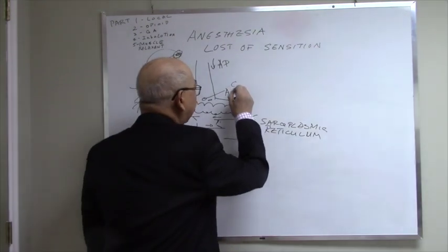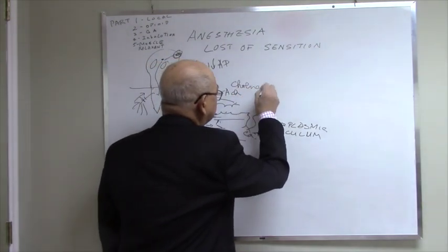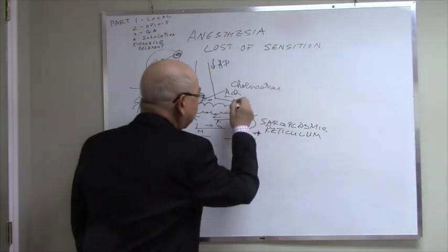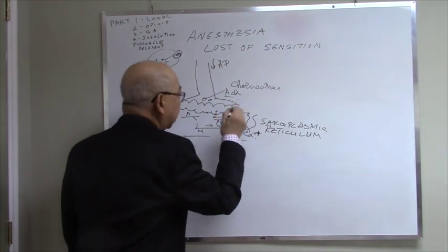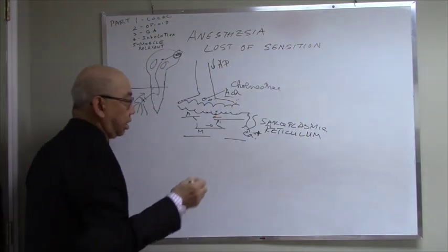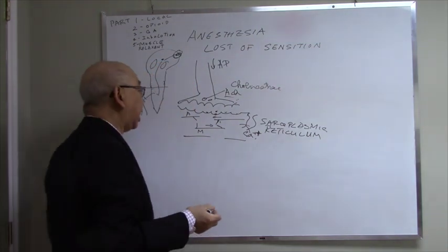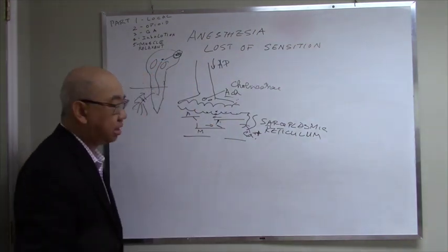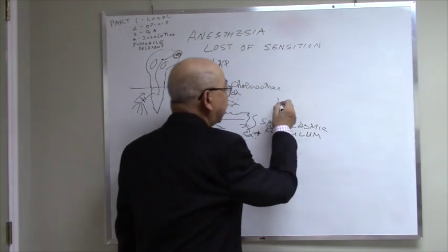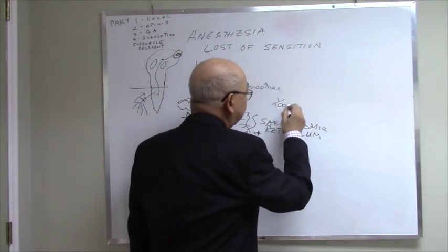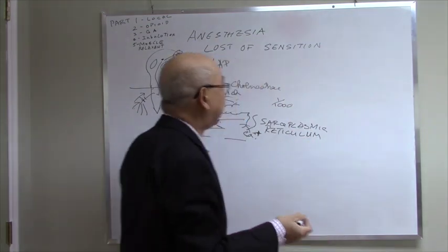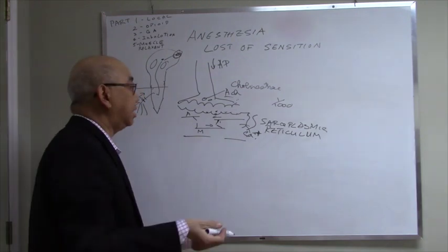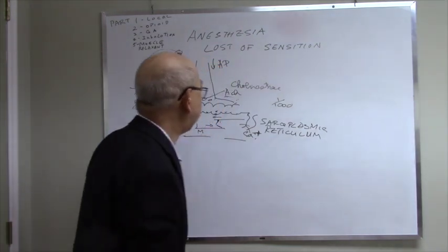Then the next step: cholinesterase comes along and destroys the acetylcholine. Calcium goes back to the sarcoplasmic reticulum. Troponin and tropomyosin relax, and the muscle relaxes. And it happens very fast — even thousandths of a second. Because you see a piano player — they can play many notes within a second.